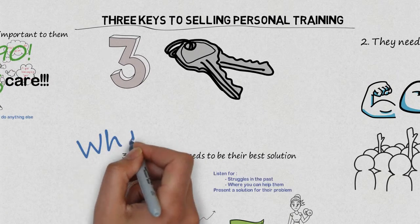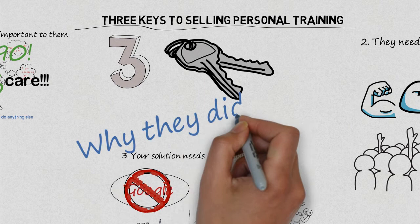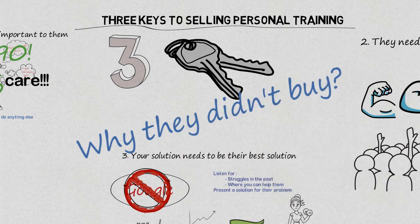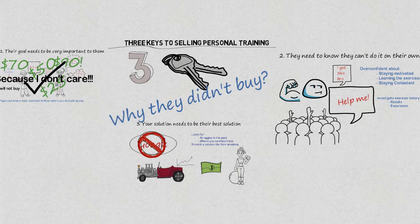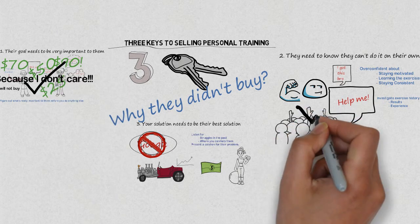But with this video, if you're ever confused as to why they didn't buy, just go back over and see if you've figured out what's really important to them, that they know that they can't do it on their own, and then take a look at your solution.